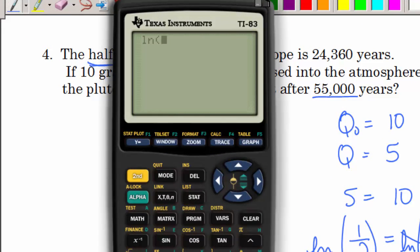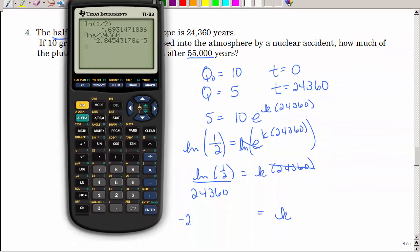Divide by 24,360, and that's going to be our k. So we have the natural log of 1 divided by 2, that's my numerator, divided by 24,360. What does that mean? What is that EE? Well, that's that exponential notation, so I have negative 2.845 times 10 to the negative fifth, a very small value.